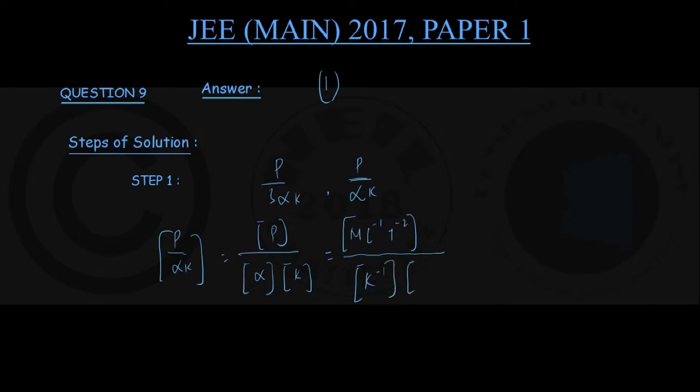Now, don't make a confusion—this K standing for the dimension of temperature, and this K standing for the bulk modulus. The bulk modulus is stress upon strain; strain is dimensionless, and stress is again force by area—the same dimensions as pressure. So M L^-1 T^-2.